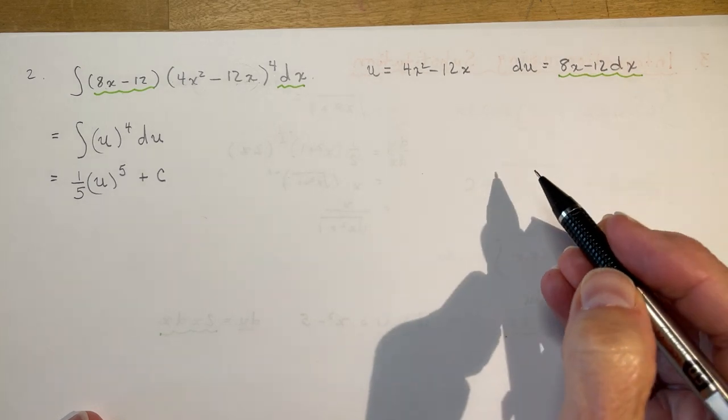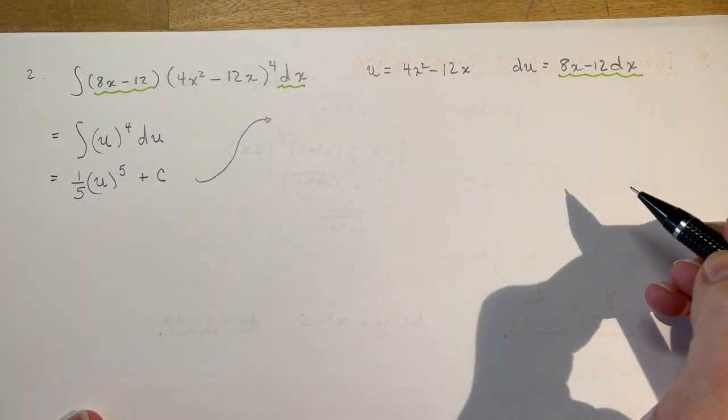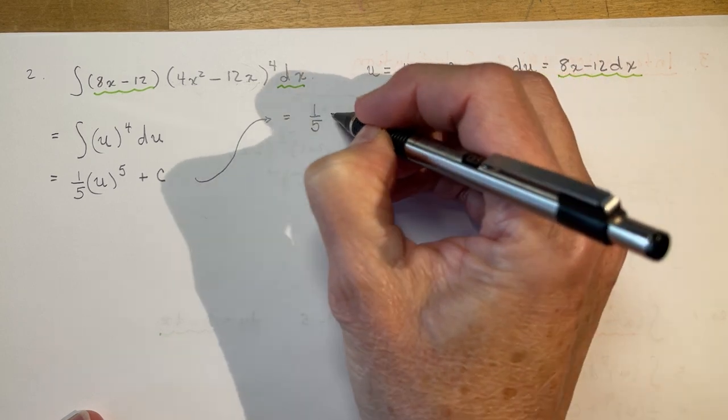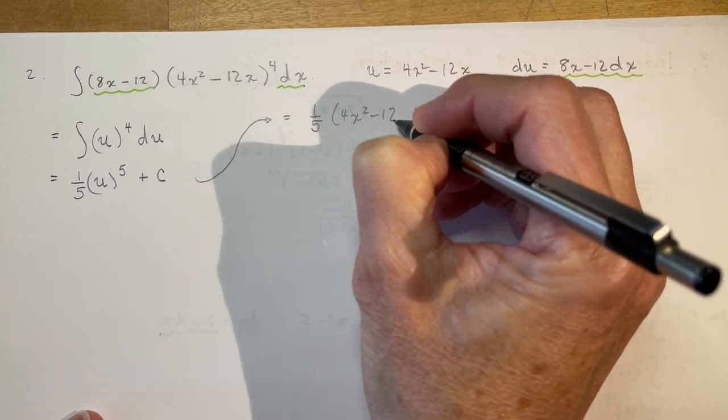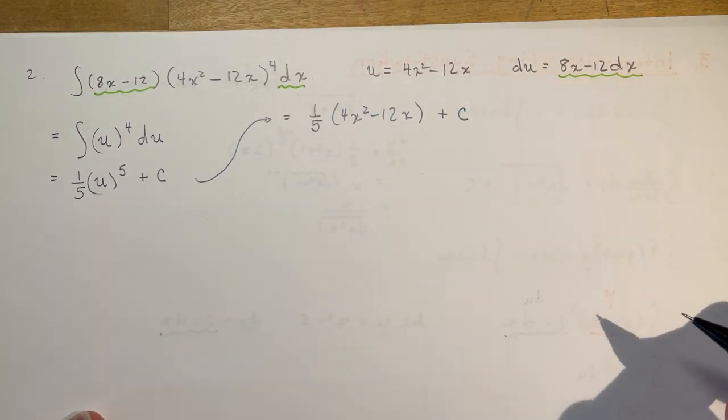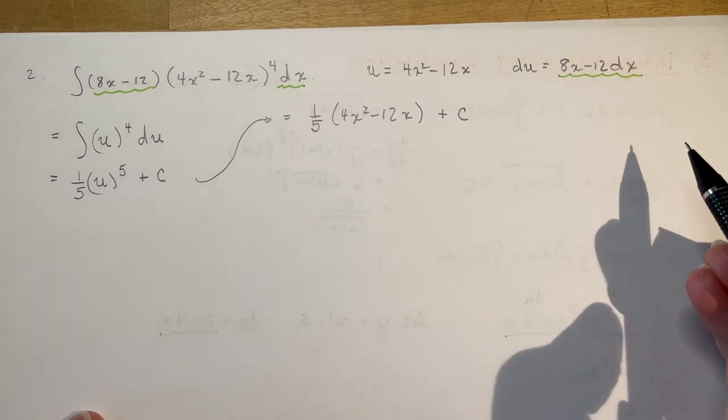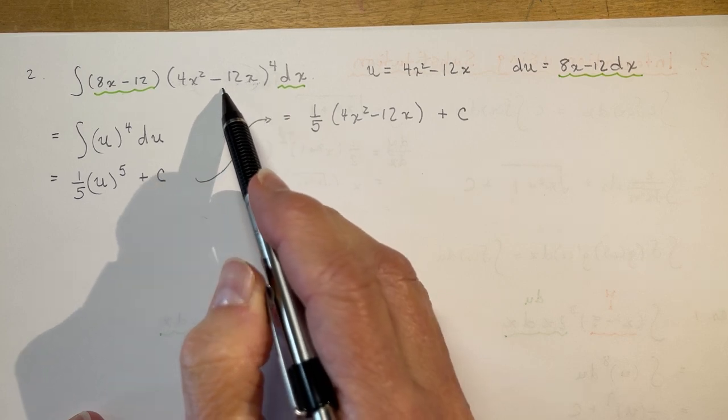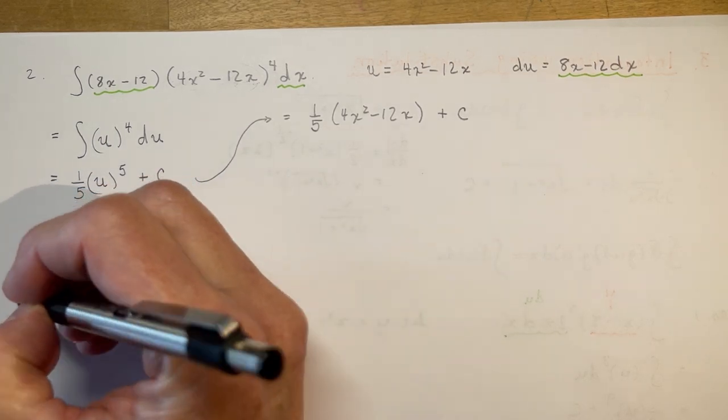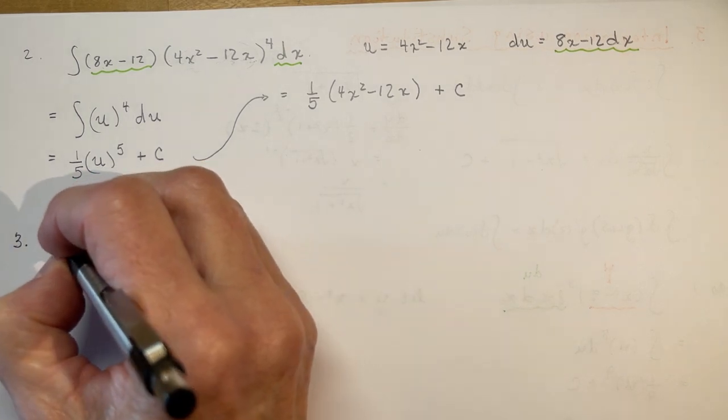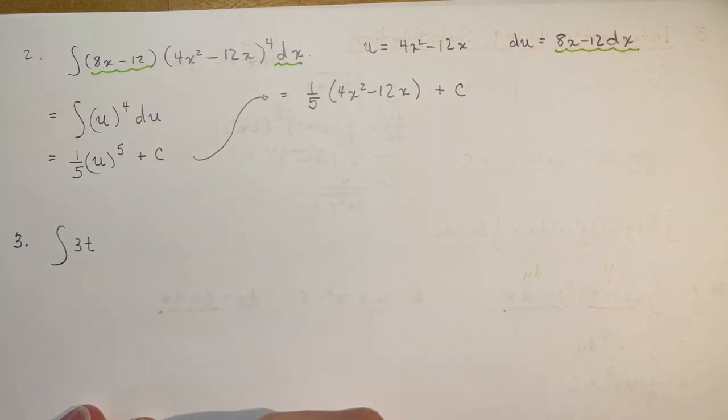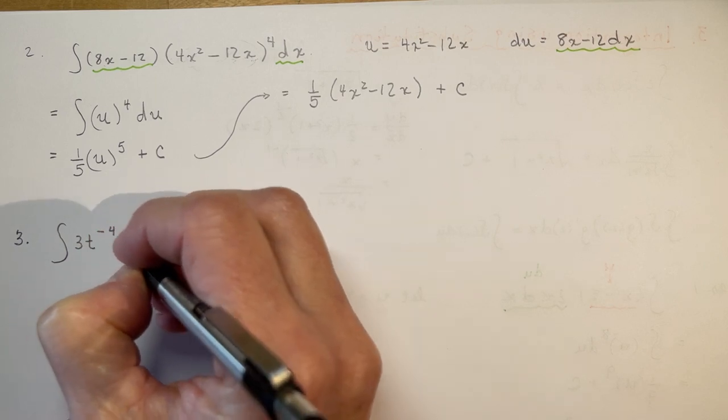And finally, remember what I told you? You have to plug these back in. I'm going to save a little bit of paper by moving this up here. So, that's going to be equal to 1 fifth. My u is 4x squared minus 12x. Don't forget to put it in brackets. And plus c. So remember to replace all your x's with u's. Find the part that you want to use for u. You can check it quickly in your head to see what kind of derivative you're going to get. So let's do one where you have to do a little bit of adjustment.